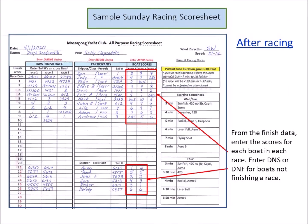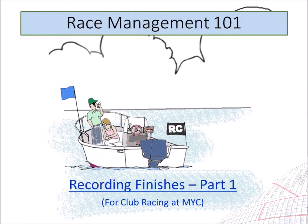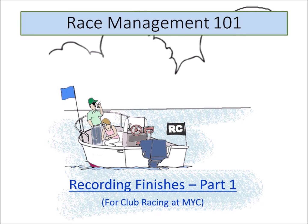After racing is done, the scores can be entered in the right-hand input section. Go down the list of participants one at a time. For each boat, locate its finish orders in the left-hand section and write in the score for each race. If a boat is missing from the race's finishers list, assign DNS (did not start) or DNF (did not finish) as appropriate in the scoring box. DNS and DNF result in the same score, so it doesn't really matter which is entered. When you've entered the scores for every participant, your work recording the racing for the day is done.